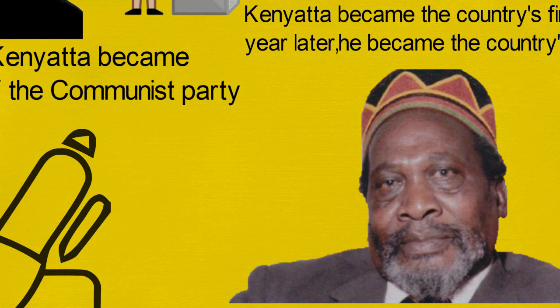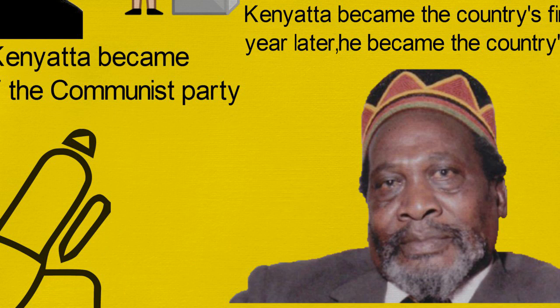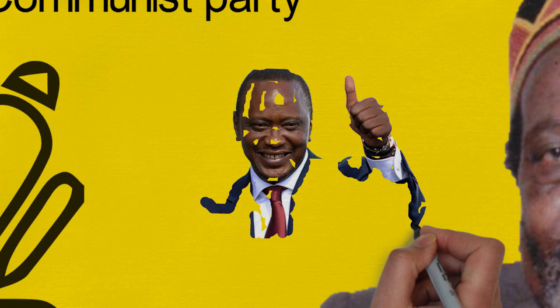Kenyatta was a polygamist with three wives and had eight children. Notable among them are Peter Mungai Kenyatta, who was a prime minister, and Uhuru Kenyatta, president of Kenya.